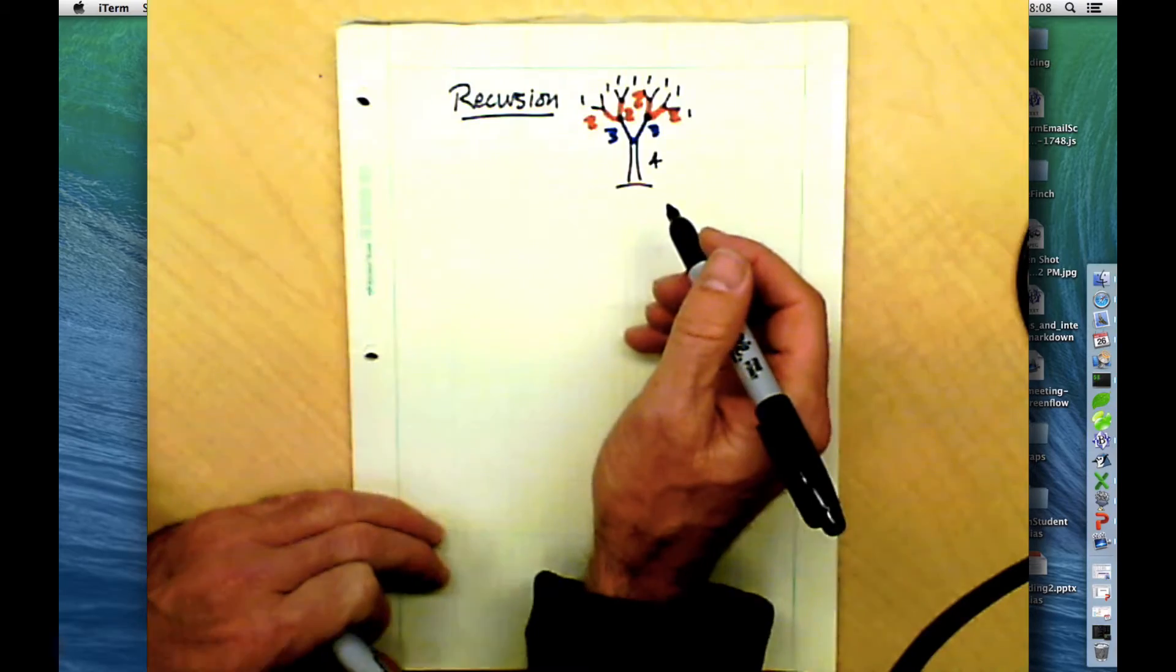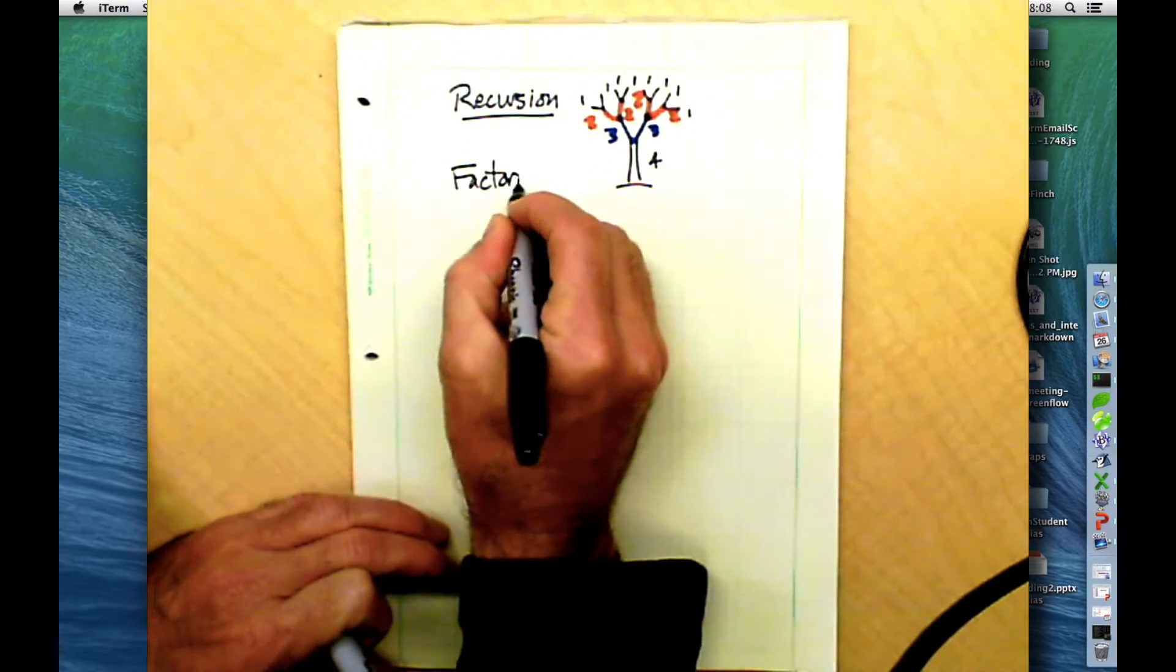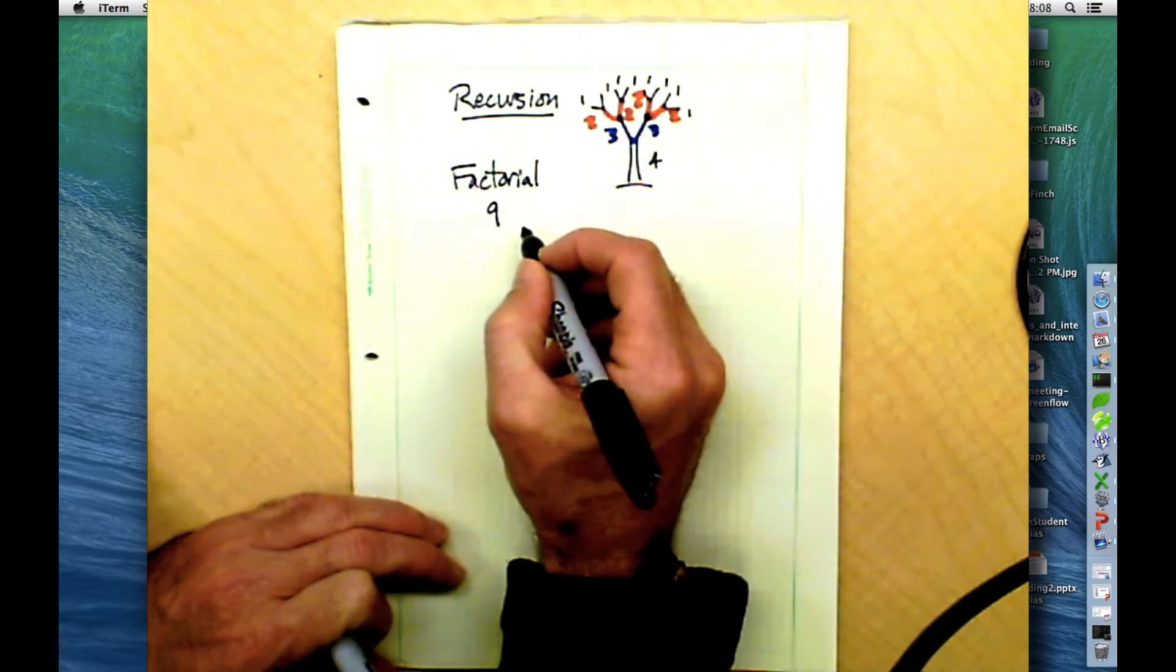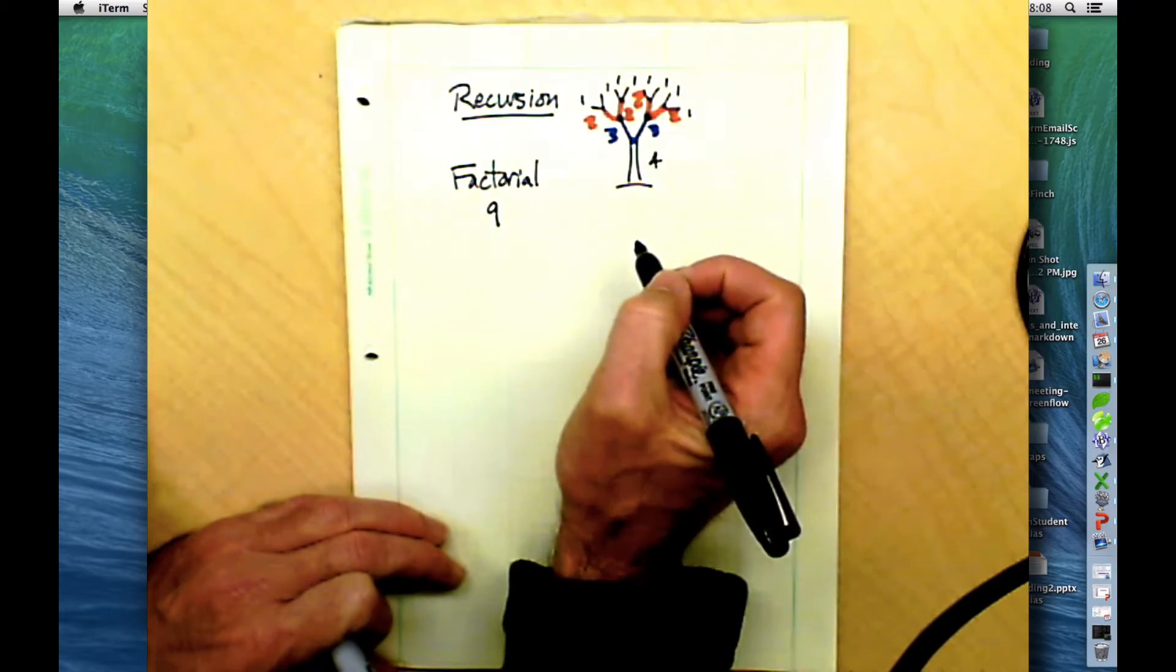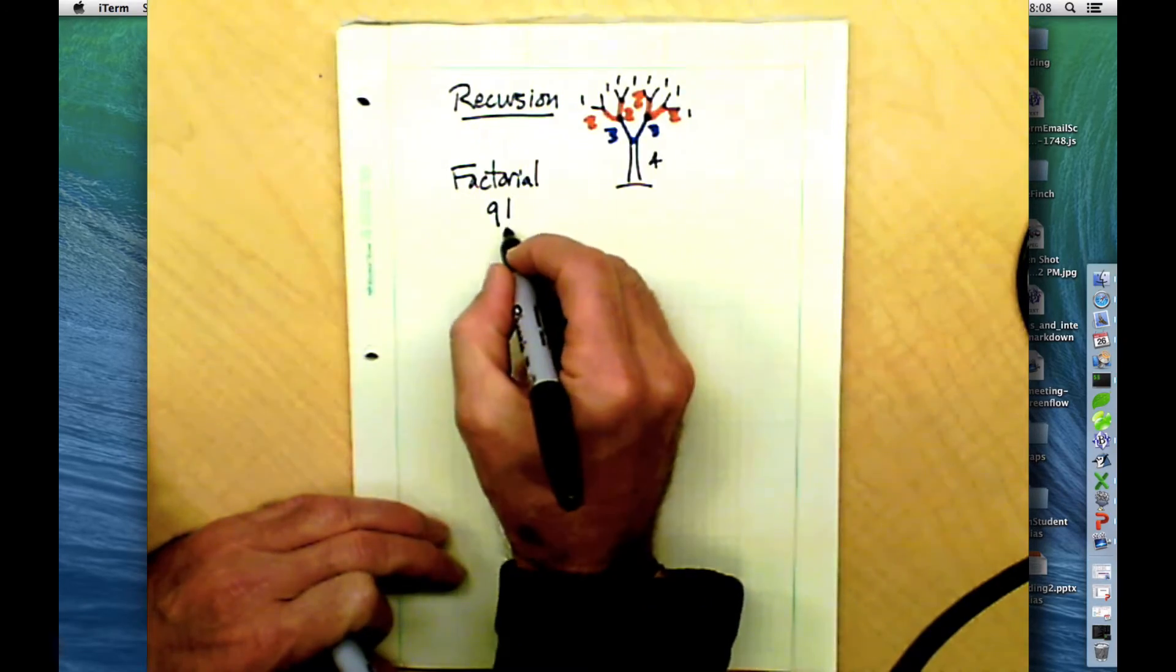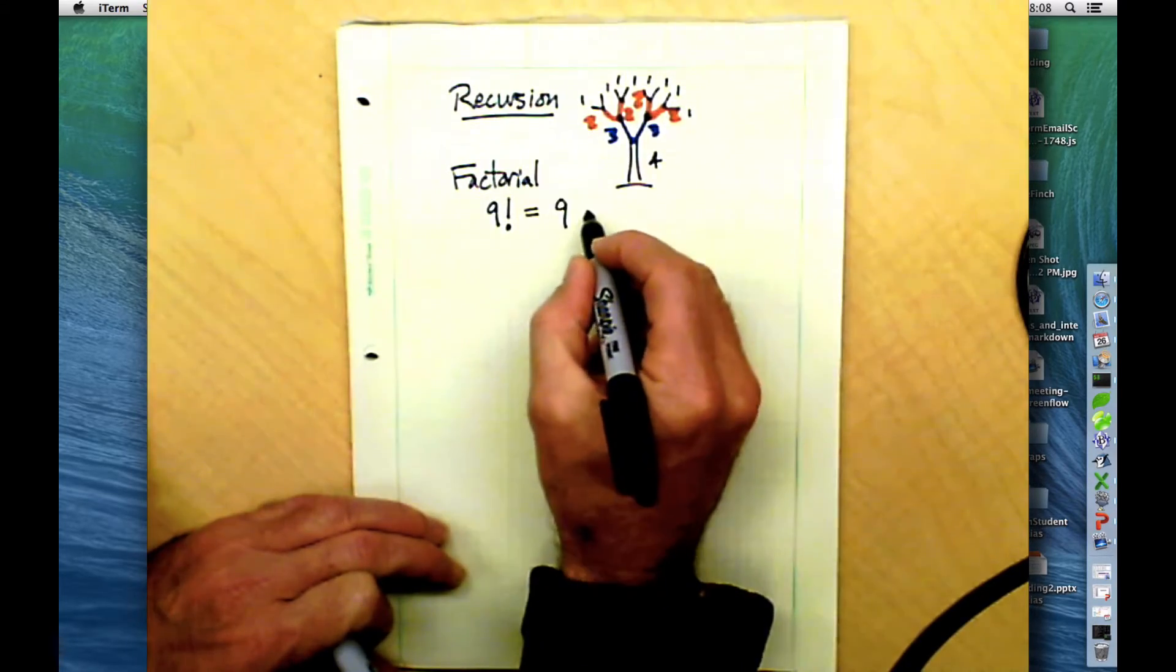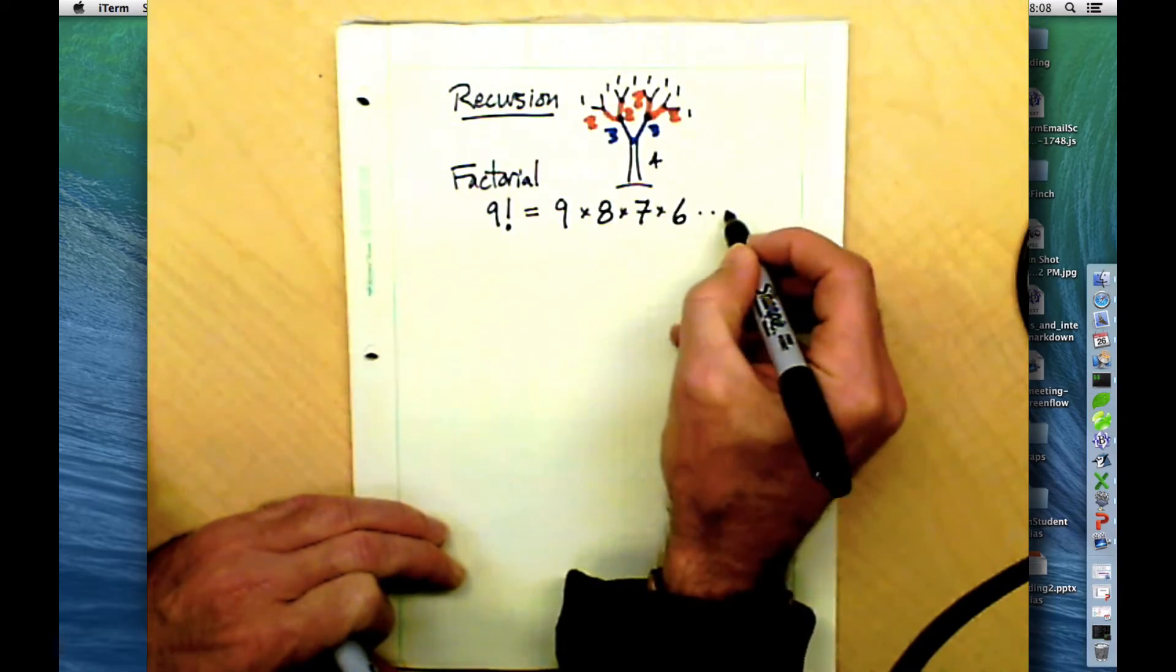The same thing can happen in math. If you think about a factorial, a factorial is simply a number multiplied by all the numbers below it, all the integers below it, all the way down to one. And you indicate a factorial with an exclamation point. So nine factorial is actually nine times eight times seven times six, all the way down to one.